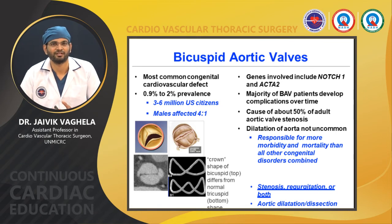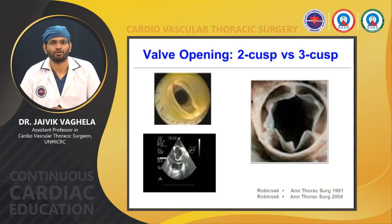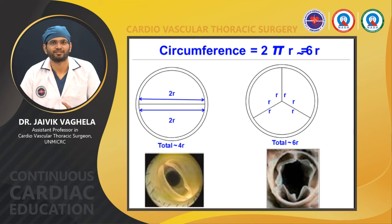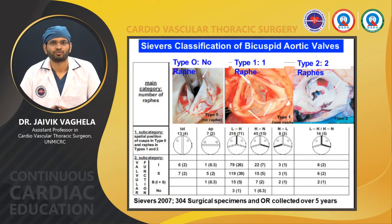The bicuspid aortic valve differs from the tricuspid valve because its opening area is smaller — with two cusps the aortic opening area is relatively smaller, while with three cusps the area is larger. Using the formula circumference = 2πr: with two cusps the radius is smaller, while with a tricuspid valve the circumference and area are larger. The Sievers surgical classification of bicuspid aortic valve categorizes it as Type 0, Type 1, or Type 2 depending on the raphe — no raphe, one raphe, or two raphes.